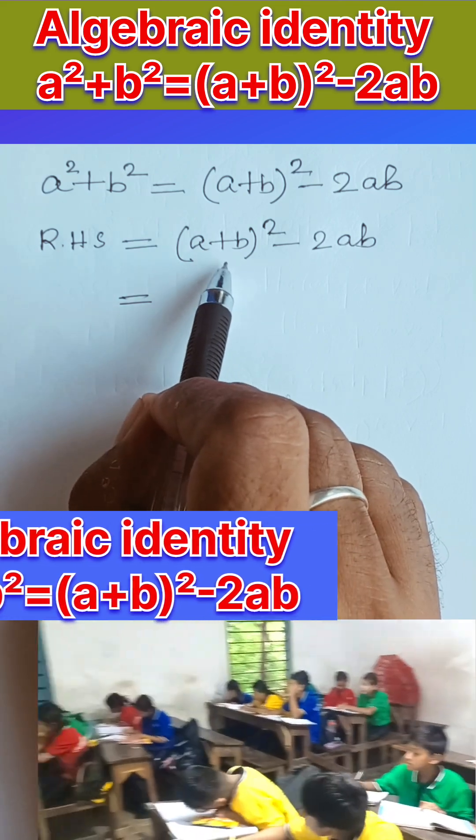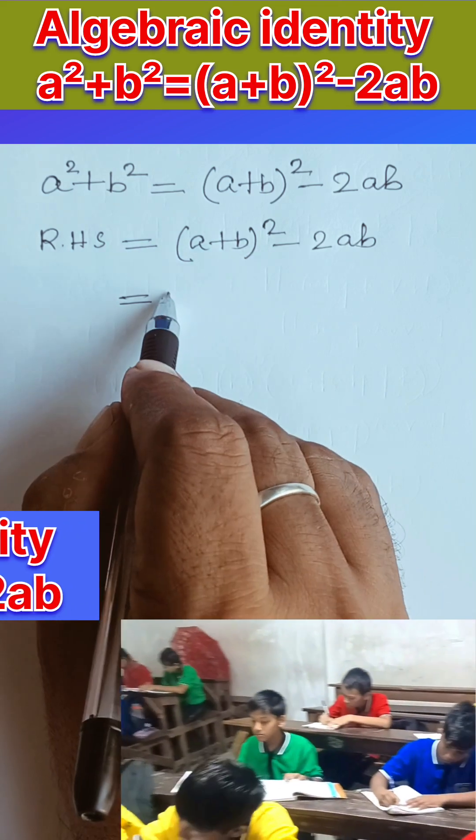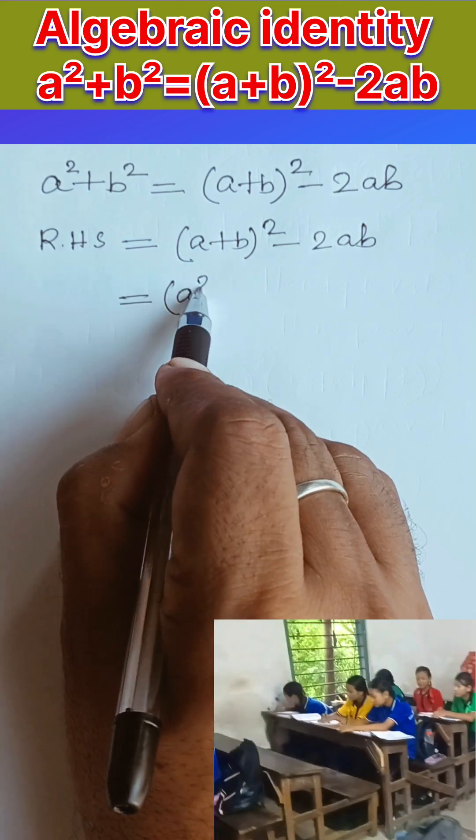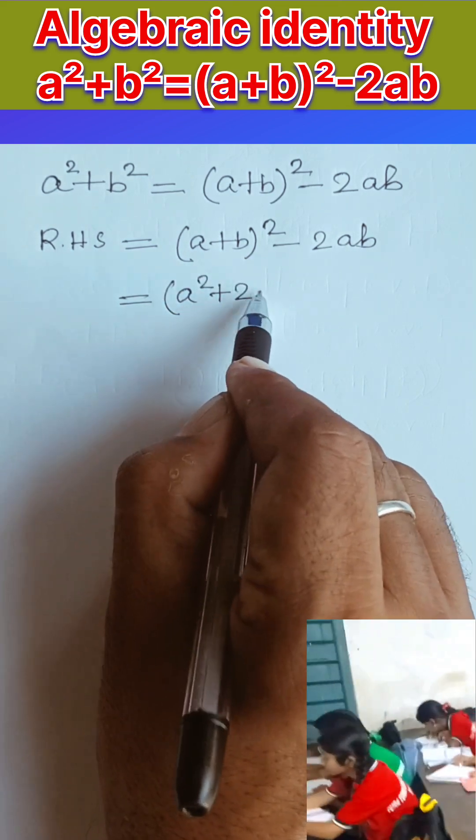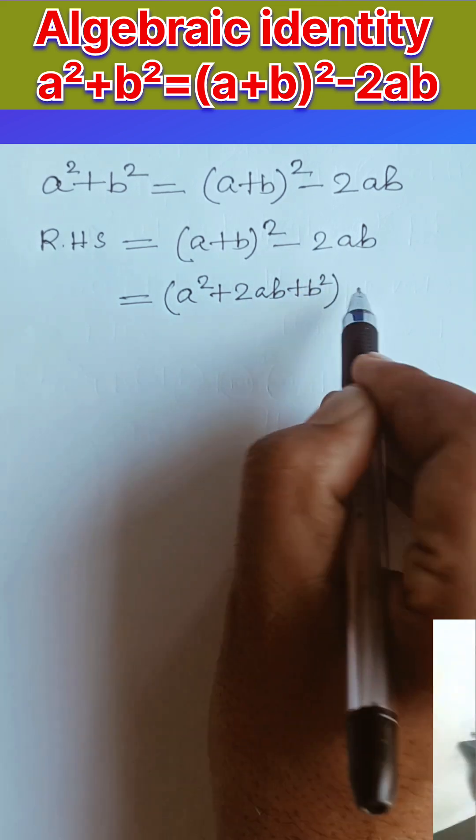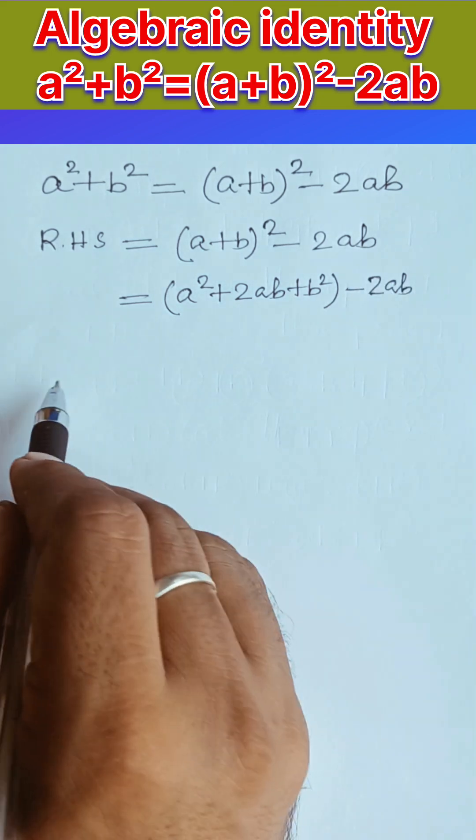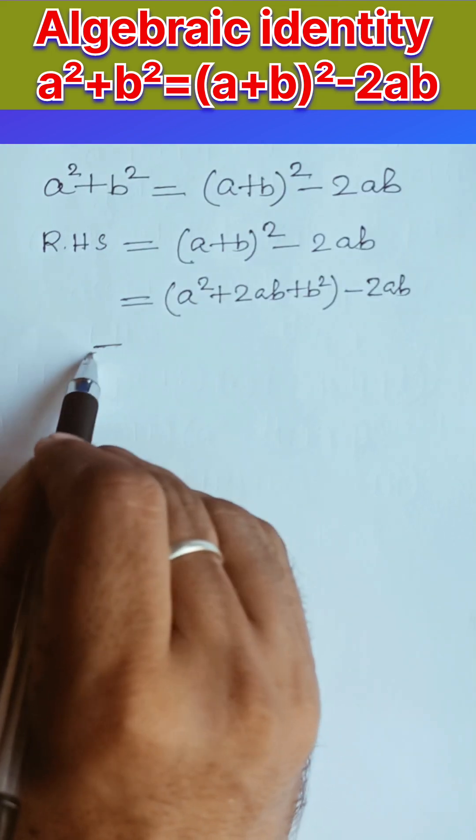That is (a+b)² that will give you a² + 2ab + b² - 2ab. All right, now see if I close the bracket, break the bracket.